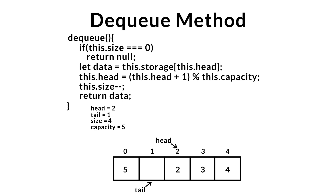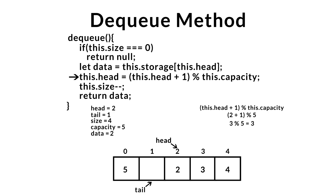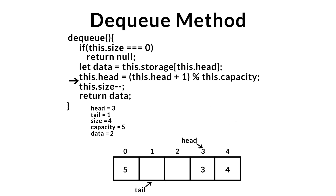One more example — executing DQ again. The queue is not empty, so we store the data at the front. We advance the head: head is two, two plus one is three, three modulus five gives remainder three. We decrement the size and return the removed data. So that is pretty much the ins and outs of queues. I hope you guys learned something and I hope to see you in the next tutorial.